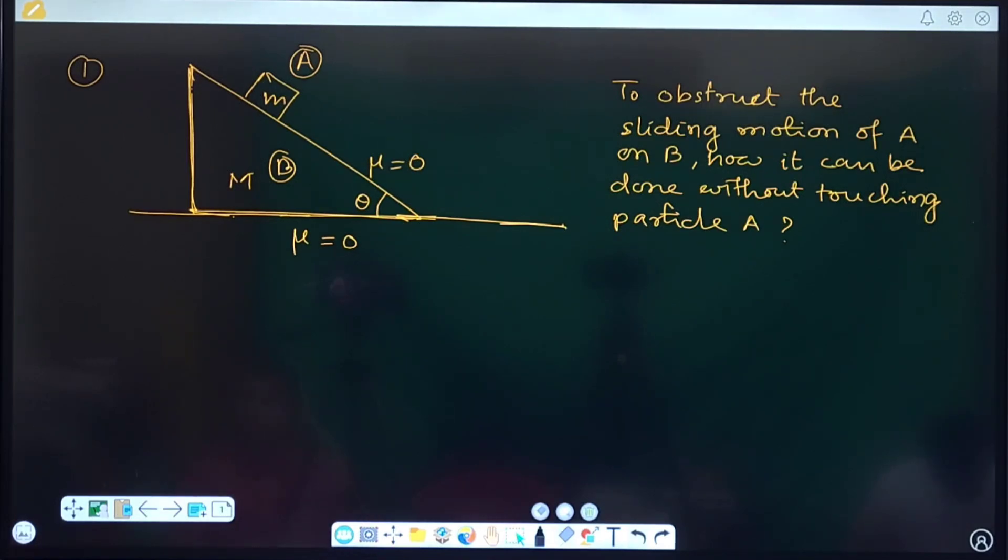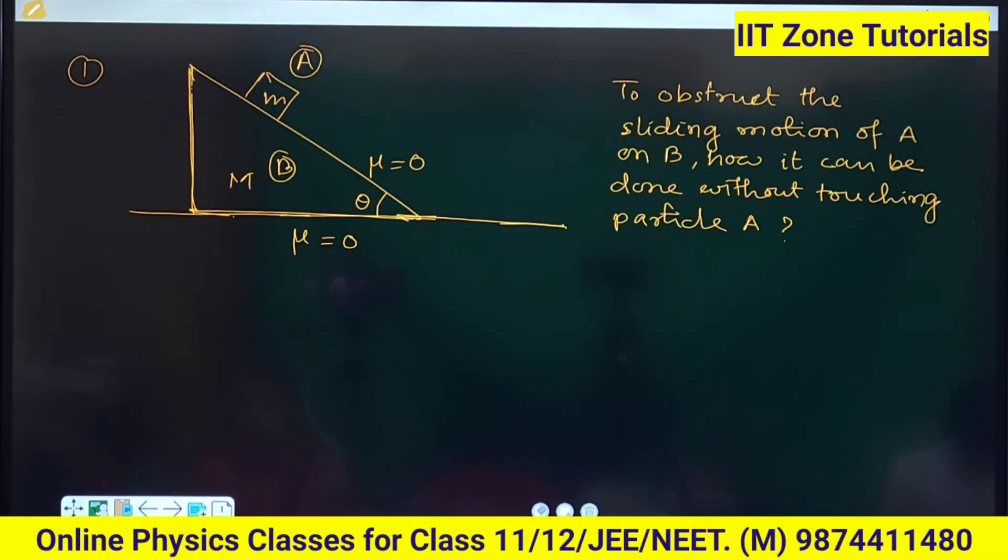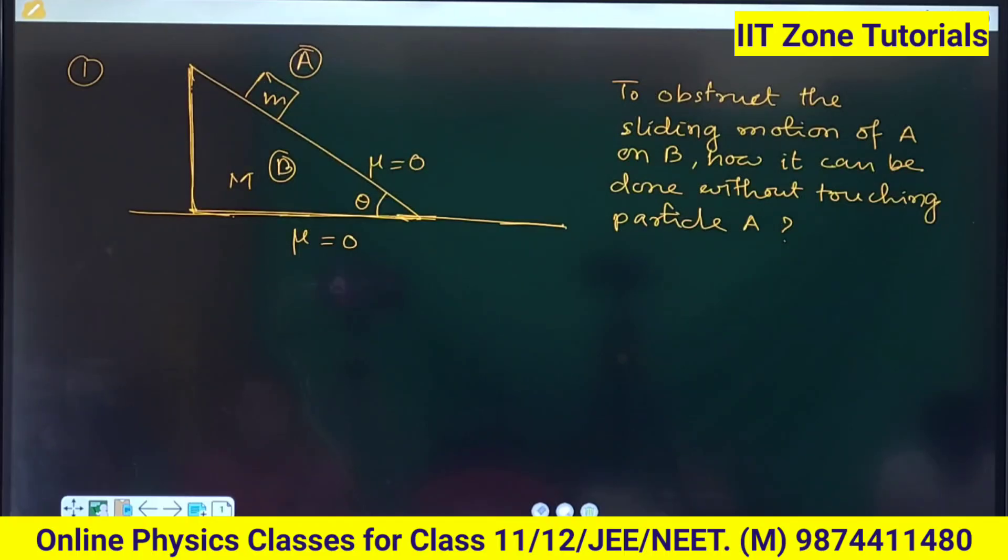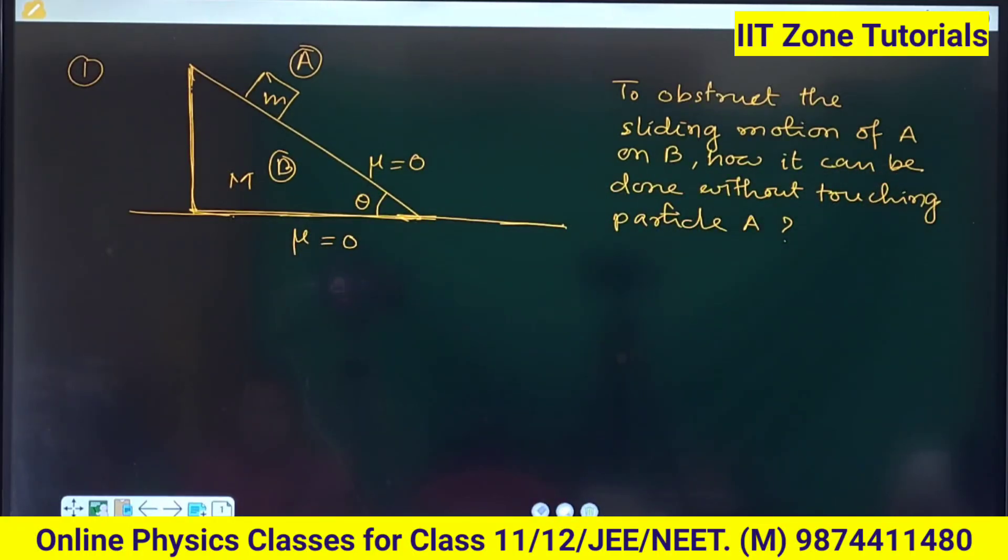So you give a correct approach that if you apply force on B then definitely B will get acceleration, right? And that accelerated B will be treated to be the non-inertial reference for the particle A, and we have discussed